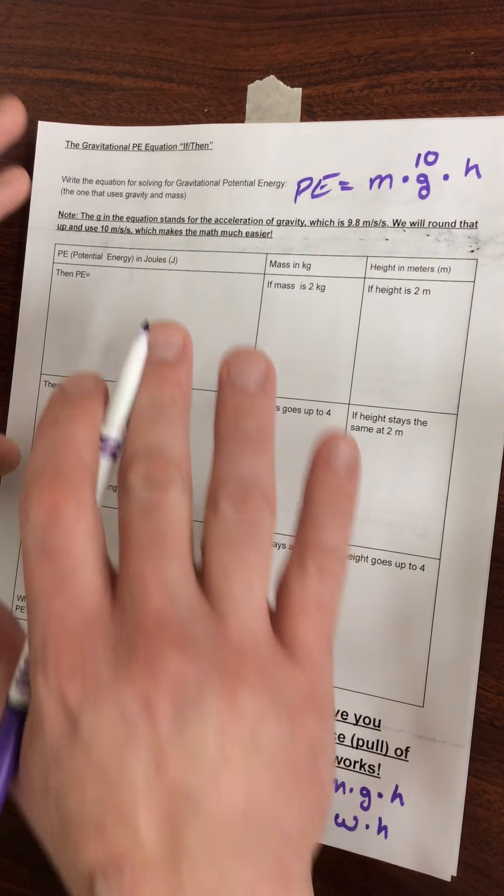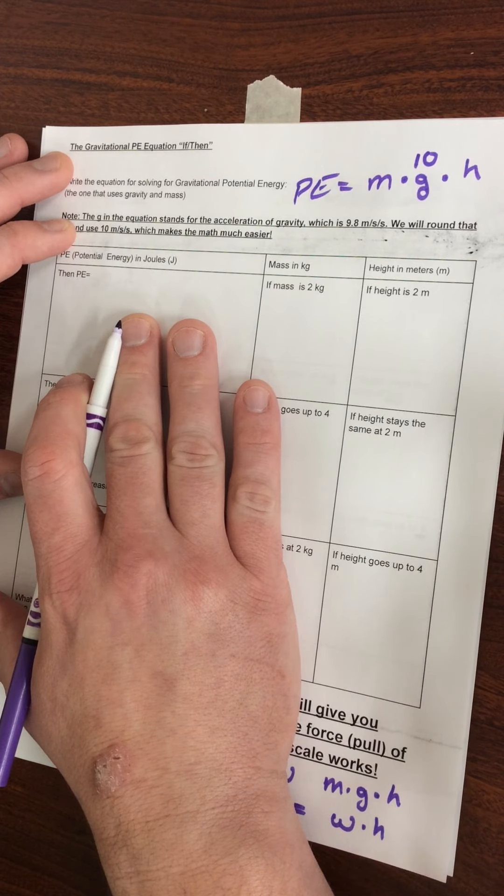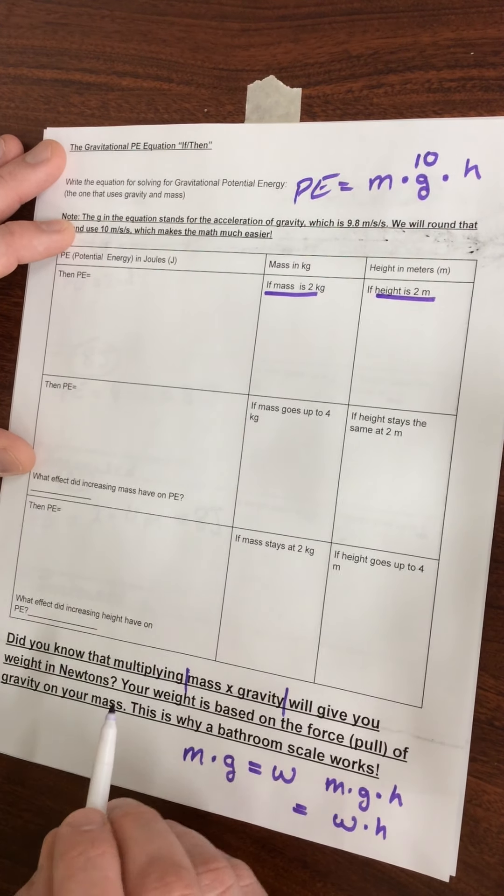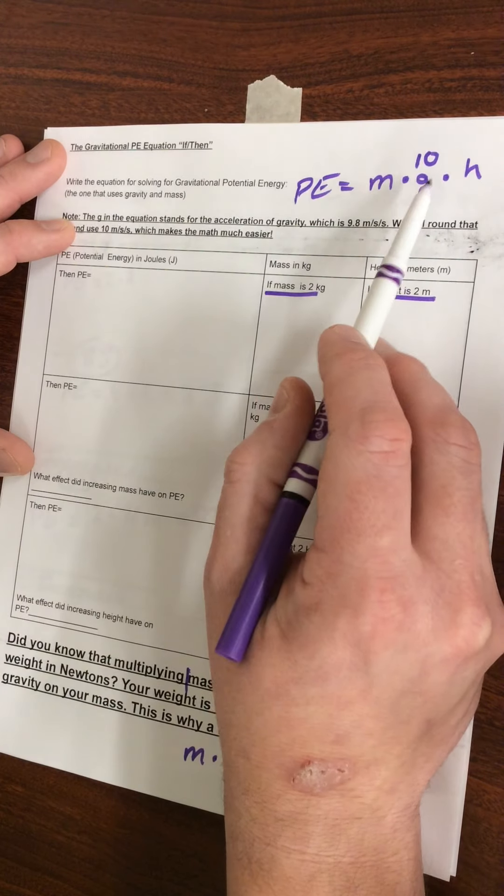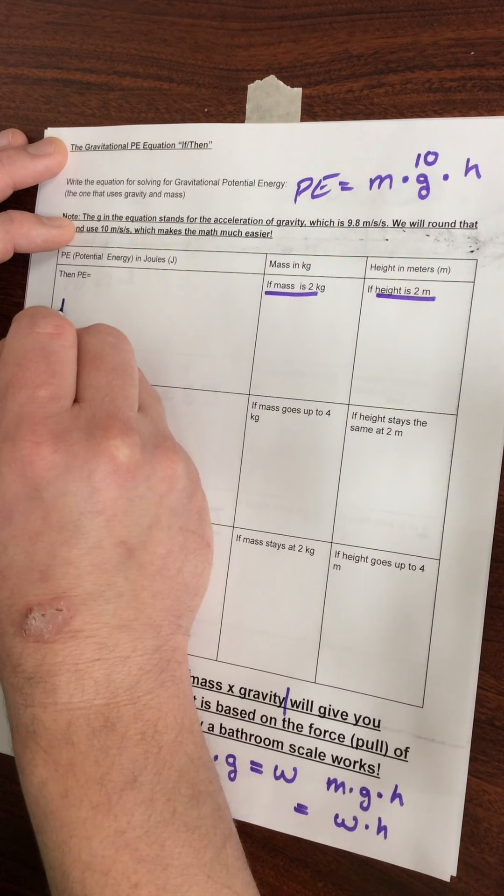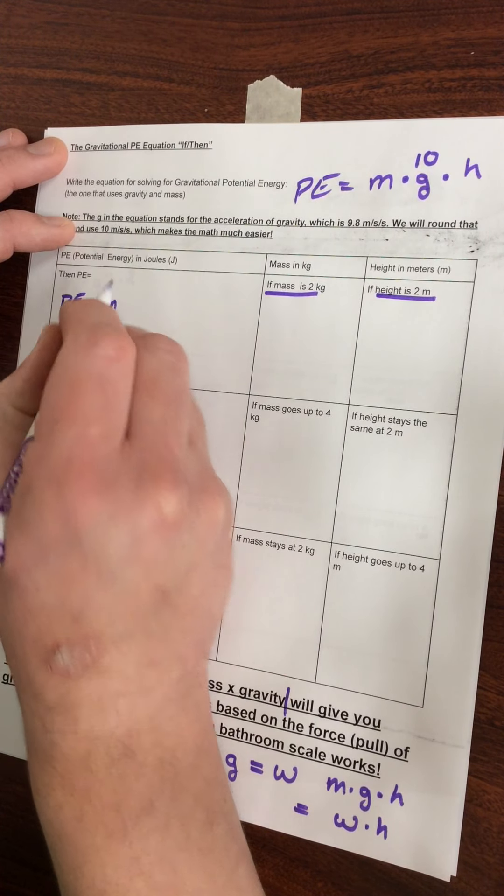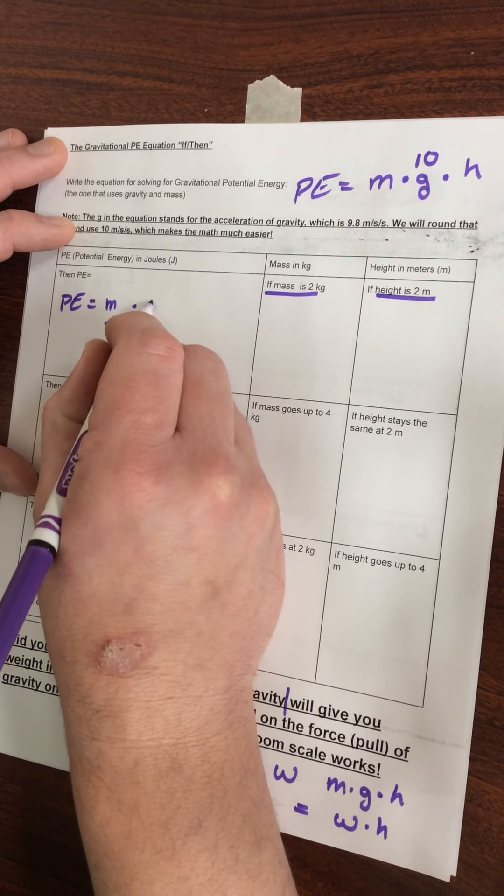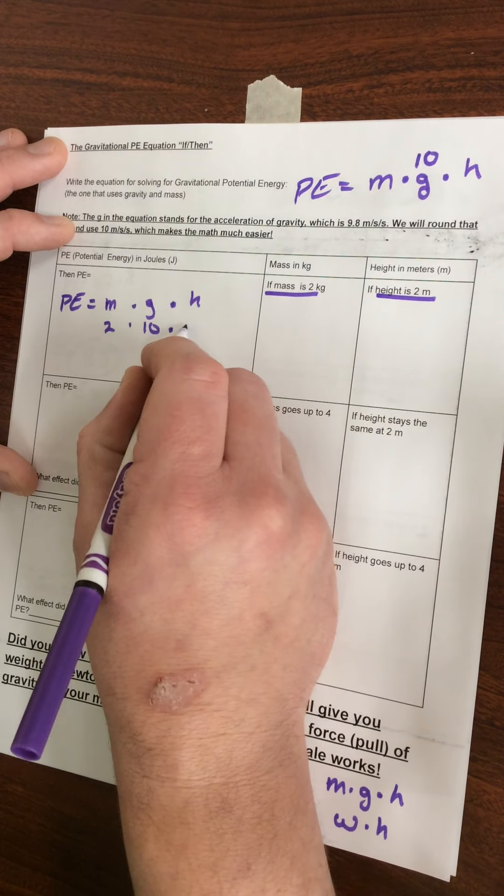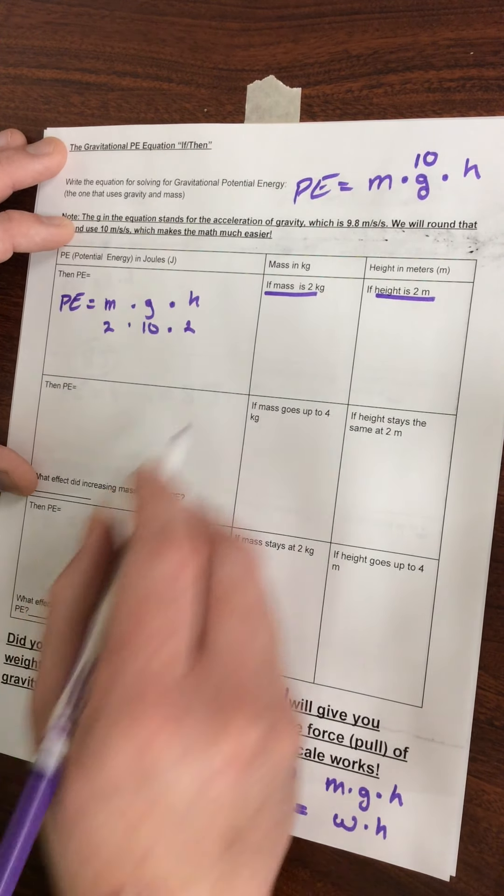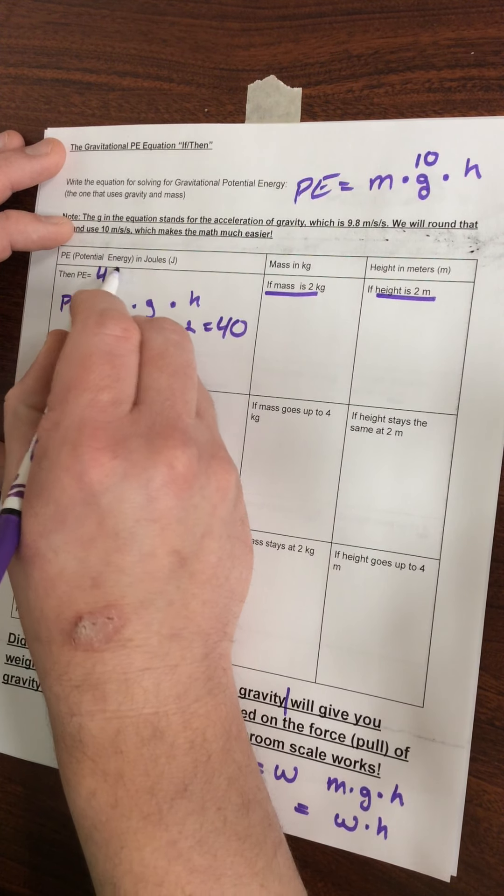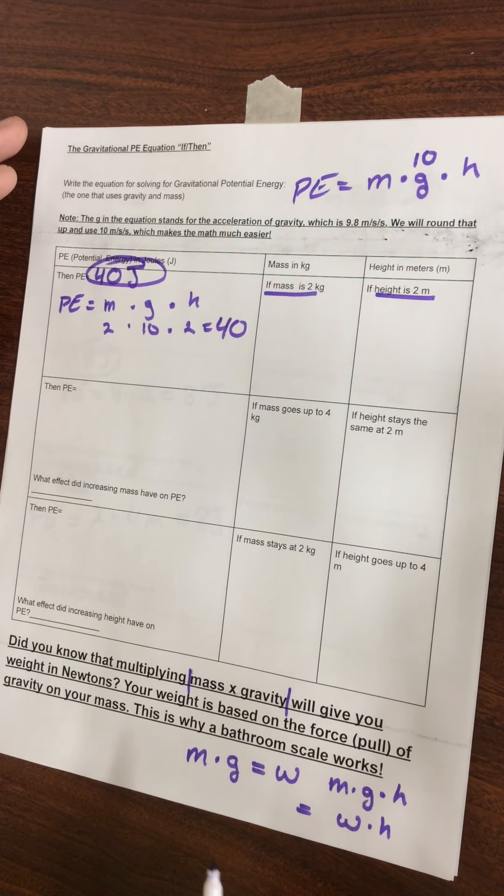Same as the last two, we're going to start with our base here. We're going to start with mass being 2 kilograms and height being 2 meters. Notice there's nothing in there for G, because like I said, G don't change. Potential energy equals mass, which we have as 2, times G, which is 10, times height, which is 2. So, 2 times 10 is 20, times 2 gives me 40. So our potential energy is 40 joules here.